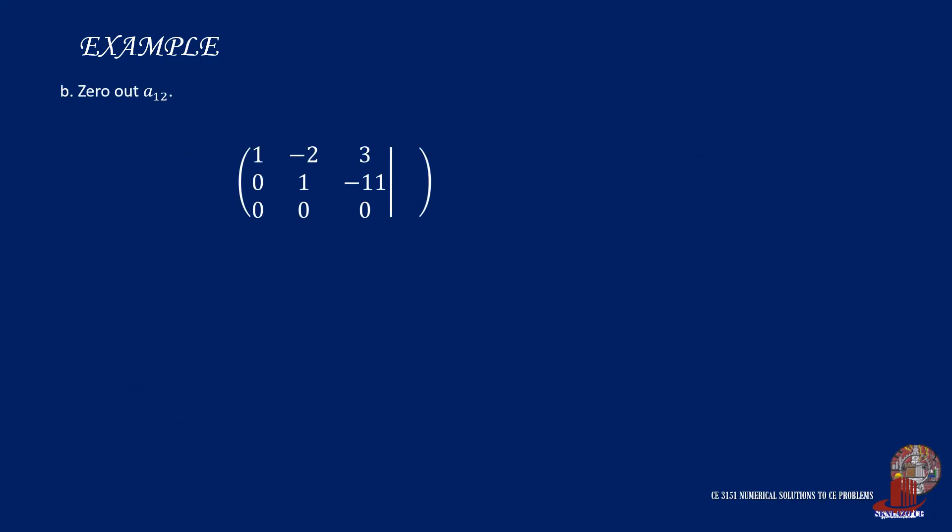We also need to zero out one more element, which is at 1,2, using the operation row 1 plus twice of row 2. With element 1,1, we have 1 plus 2 of 0, leaving just 1. Element 1,2 has negative 2 plus twice of 1, and that is 0.